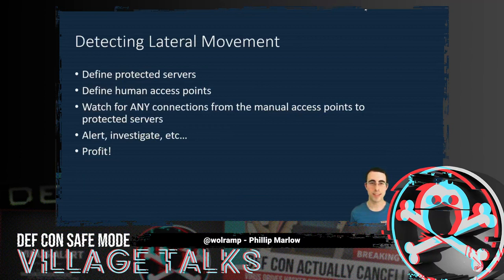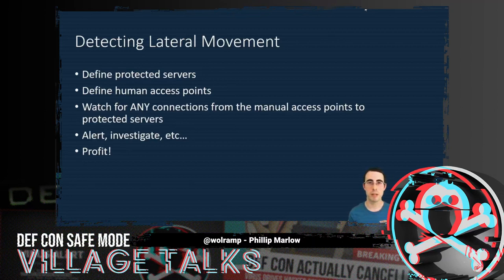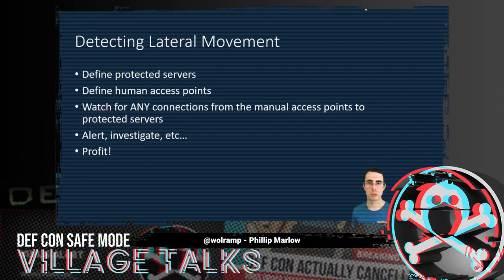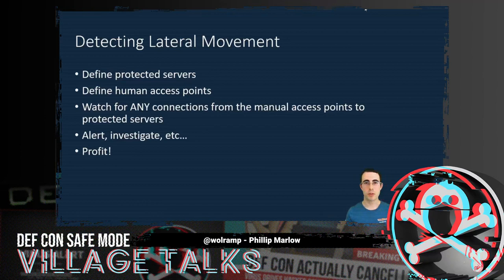So how do we actually go about detecting this lateral movement? First, define all of the protected servers — in our simplified environment that's the app server, but it might also include DevOps automation servers, web servers, database servers, all possibly behind load balancers. Whatever humans should not be logging into goes in this list. Second, define all of the human access points — in our simplified environment that's just the bastion host, but depending on your network architecture you might include load-balanced machines, virtual desktops, or employee workstations. Then all we do is look for any connections between those two sets of servers, alert, investigate, and enjoy detecting this lateral movement.